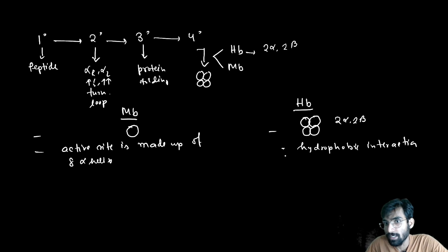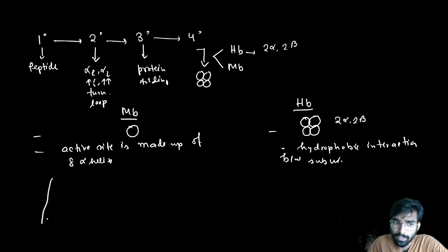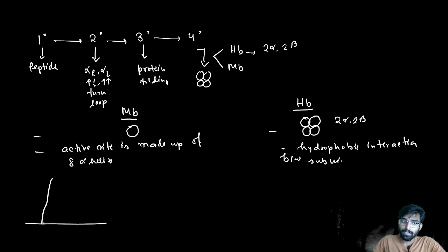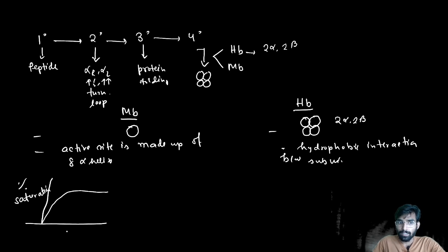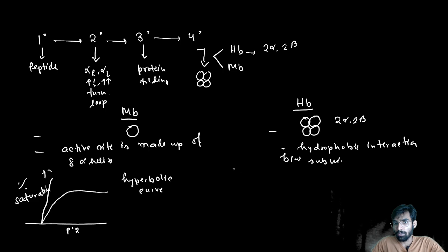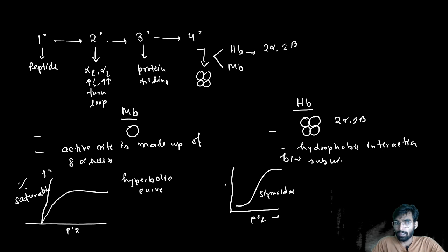Myoglobin follows a simple Michaelis-Menten kinetic equation — if you plot percentage saturation against pO2, you get a hyperbolic curve. But in the case of hemoglobin, the curve is not hyperbolic; rather it is sigmoidal, plotted as pO2 versus percentage saturation.